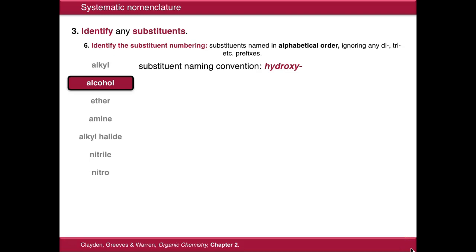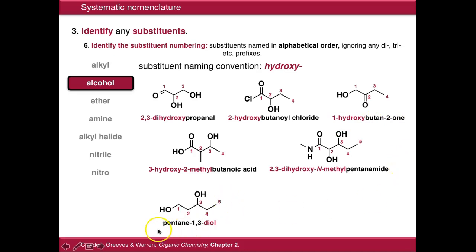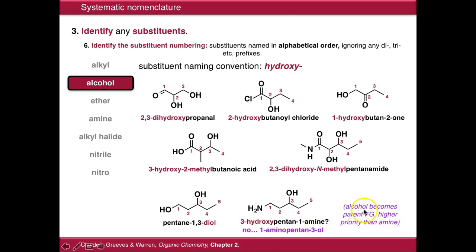Alcohols have a substituent naming convention of hydroxy. In these cases the alcohol isn't the parent functional group. So in this example, the aldehyde is the higher priority functional group and is the parent — it's a propanal molecule with alcohol substituents, dihydroxypropanal. In this case the acid chloride is the higher priority group; in this case it's a ketone, and so on. If we change one of the diol groups for an amine to get what looks like 3-hydroxypentan-1-amine, according to IUPAC rules our alcohol becomes the parent functional group because it's higher priority than the amine. So in this case it's 1-aminopentan-3-ol.